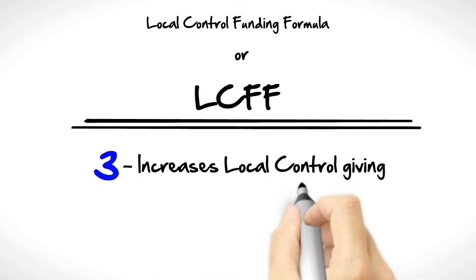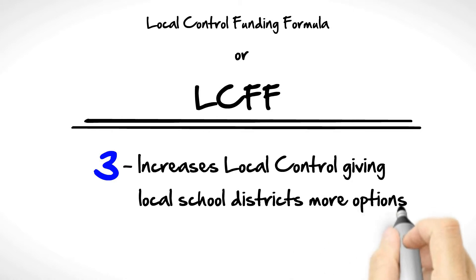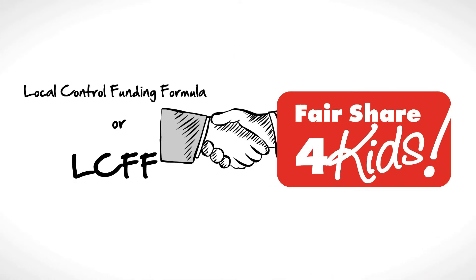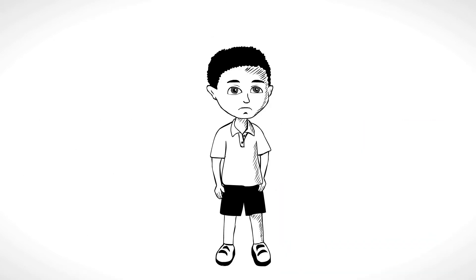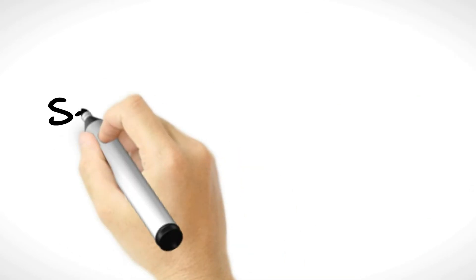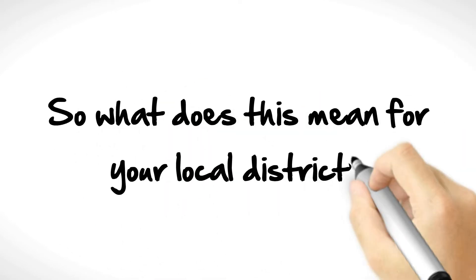Increases local control, giving local school districts more options on how to best use funds. Fair Share for Kids supports this plan so long as low-income students receive the support they need and parents have a voice on how monies are spent. So what does this mean for your local district?